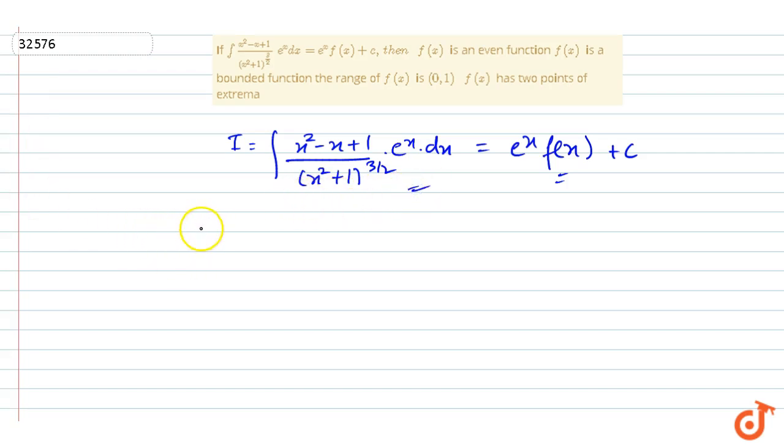First, in this integration, if we write these terms separately, I equals e^x, we can write (x² + 1) divided by (x² + 1)^(3/2) minus x upon (x² + 1)^(3/2), we can write this into dx.